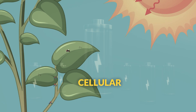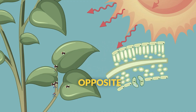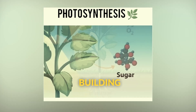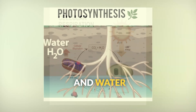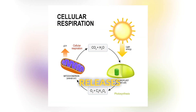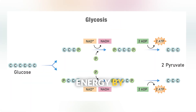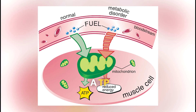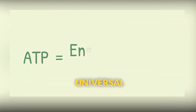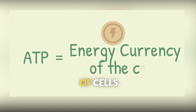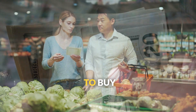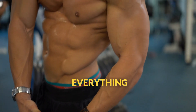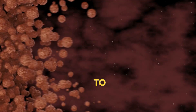Cellular respiration is essentially the opposite of photosynthesis. Photosynthesis stores energy by building glucose from carbon dioxide and water. Cellular respiration releases that stored energy by breaking glucose back down. The goal is making ATP — adenosine triphosphate — the universal energy currency of cells. Just like you use money to buy different things, cells use ATP to power everything from muscle contractions to building proteins.